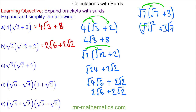The square root and the square will cancel, so we're left with 7. And the square root of 7 has no square factors, so the answer is 7 plus 3 root 7.